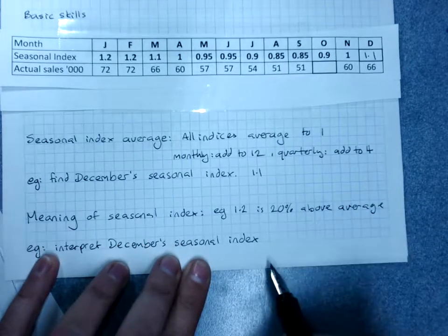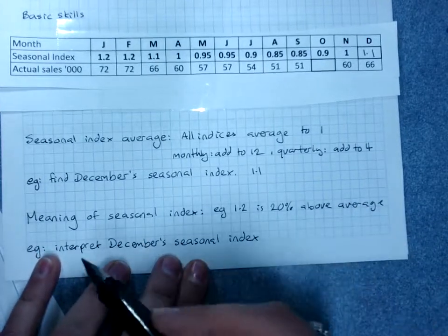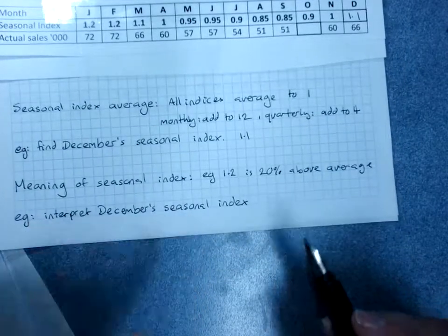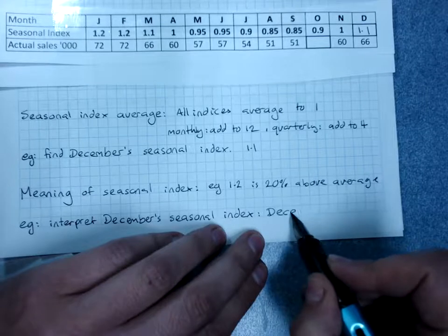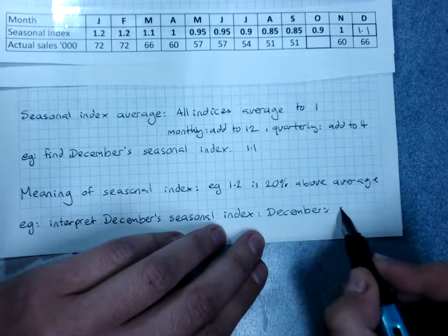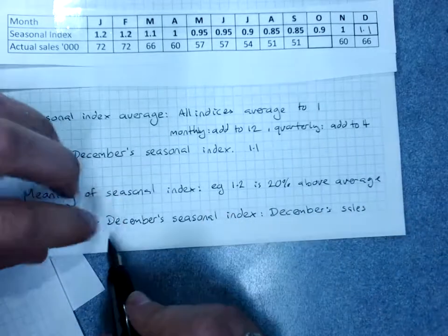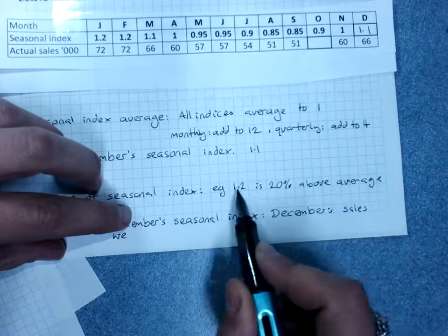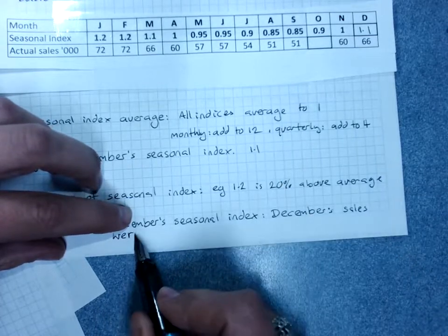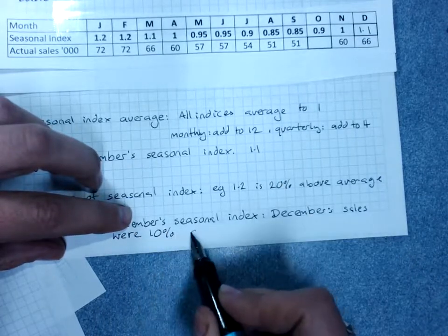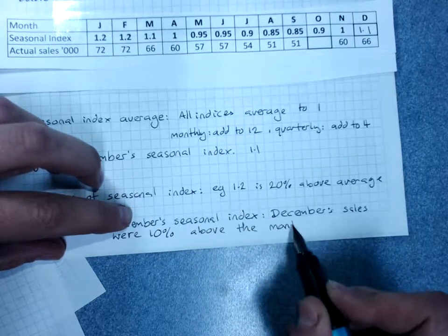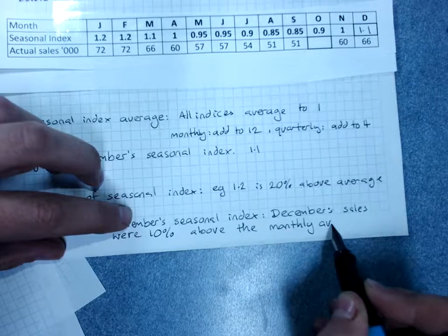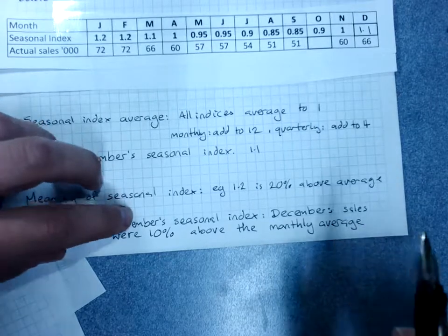So December's seasonal index, if we interpret it, says that December's sales were 10% above the monthly average.